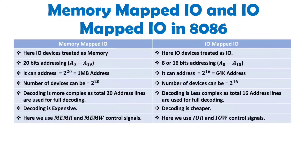Regarding control signals: since I/O devices are treated as memory in Memory Mapped I/O, the control signals are Memory Read and Memory Write. In I/O Mapped I/O, I/O devices are treated as input-output, so the control signals for read and write are I/O Read bar and I/O Write bar. Control signals play a very essential role in read and write operations.